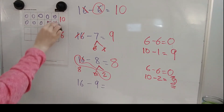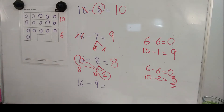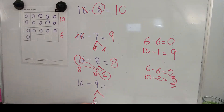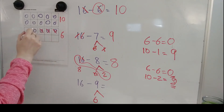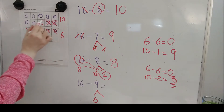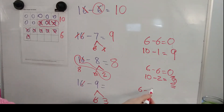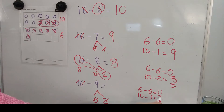Let's do the last one. 16 minus 9. Inside the 9, there is a 6. So I'm going to take away the 6 first. 1, 2, 3, 4, 5, 6. I'm going to continue taking away until I take away 9. That was 6. 7, 8, 9. How many more did I take away from the 10's place? I took 3 from the 10's place. 6 plus 3 is 9. So I took the 6 from the 6. 6 minus 6 and got a 0. Then I took the 3 from the 10 and got a 7. When you add those leftovers, my answer is 7.